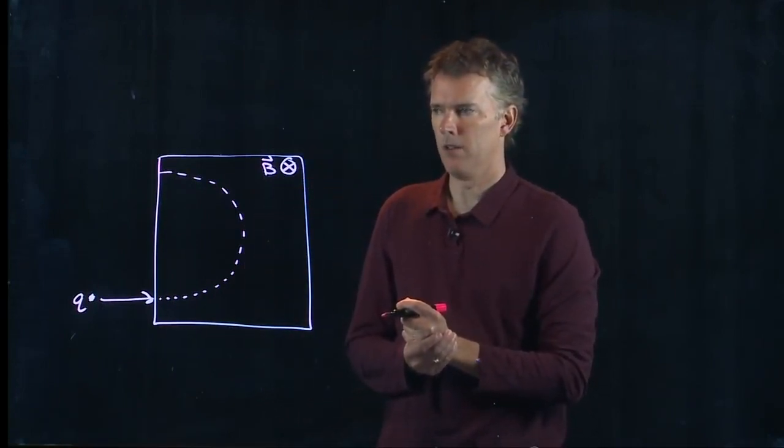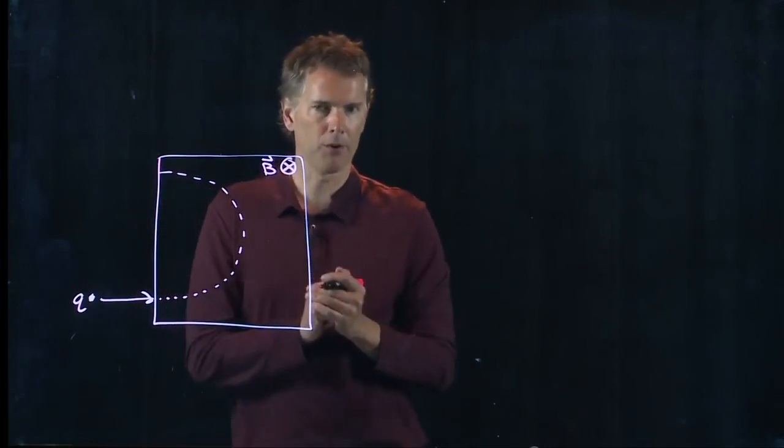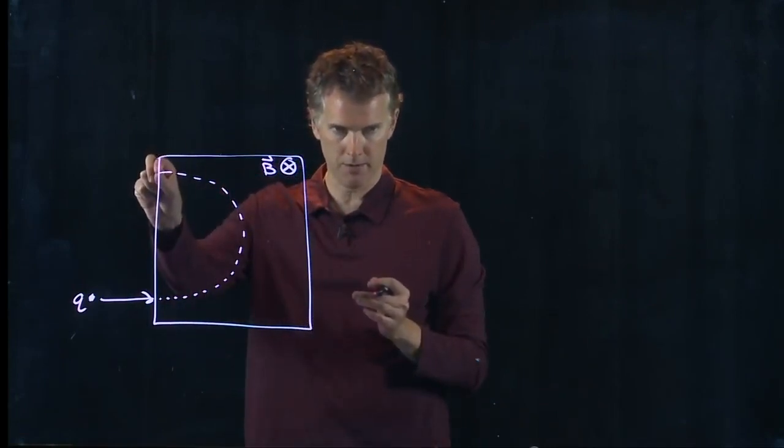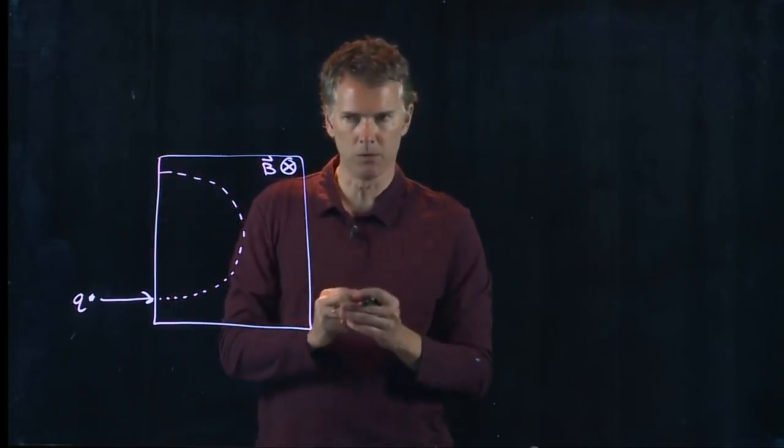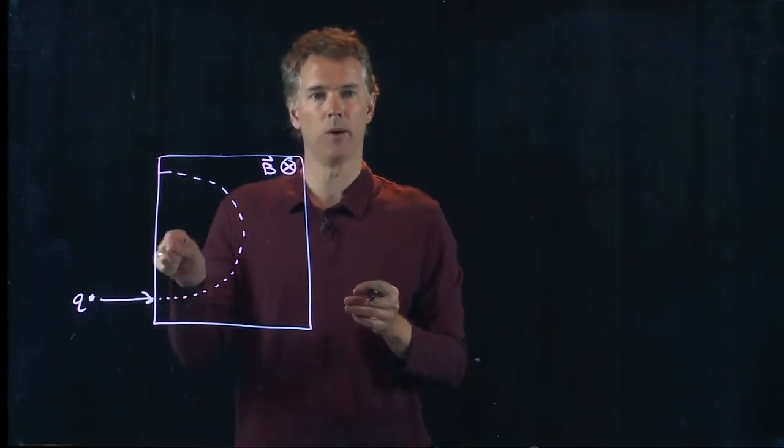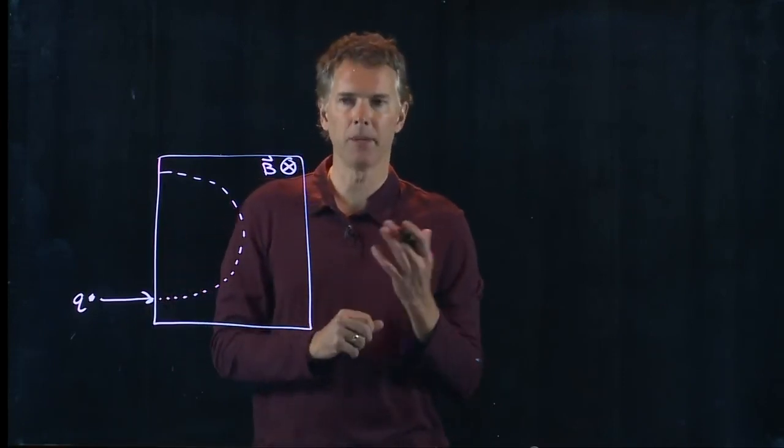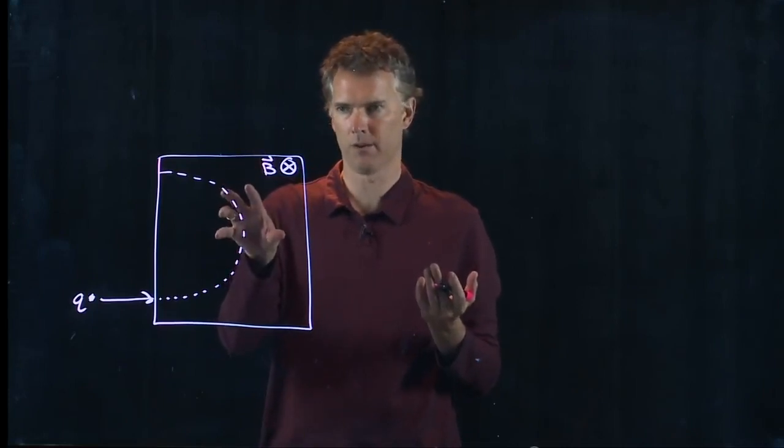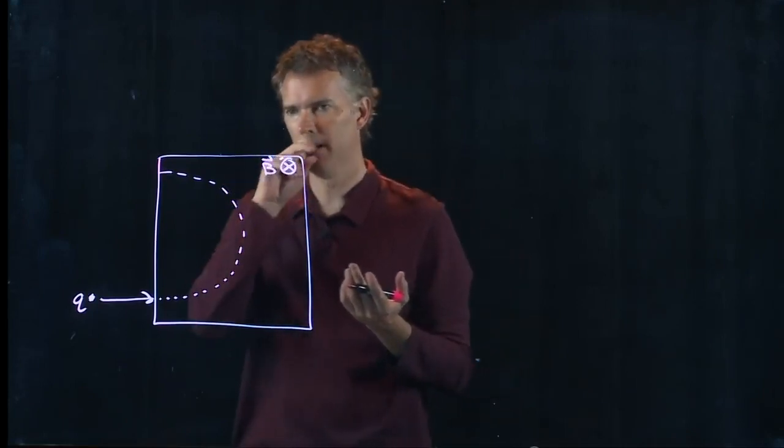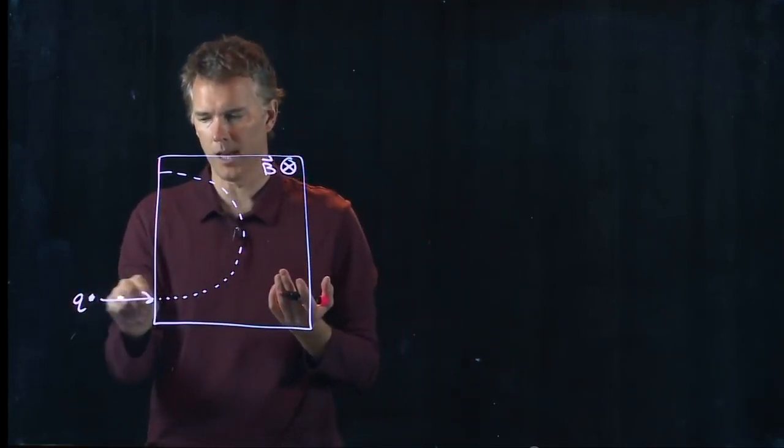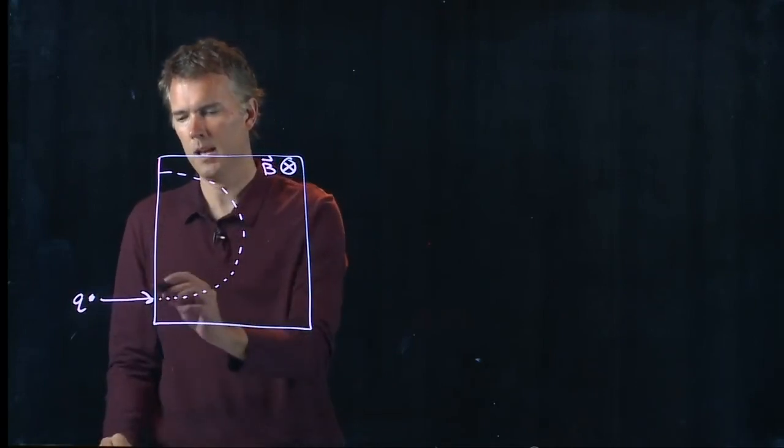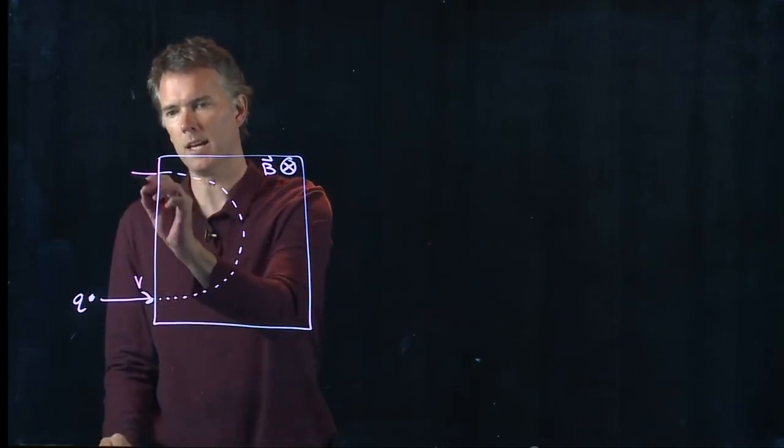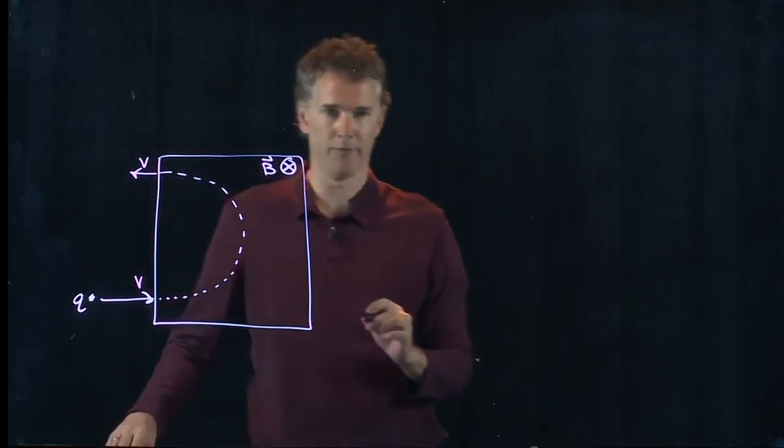Now the speed of that particle coming out over here is exactly equal to the speed of the particle when it went in, and that's because magnetic fields do no work. Can't change the kinetic energy of the particle. The kinetic energy just depends on the speed, and so if it goes in at V it comes shooting back out at V.